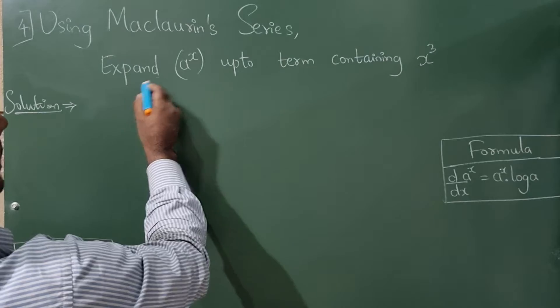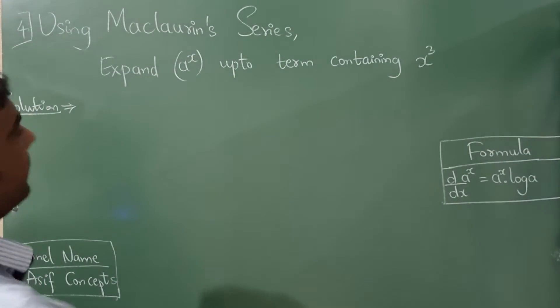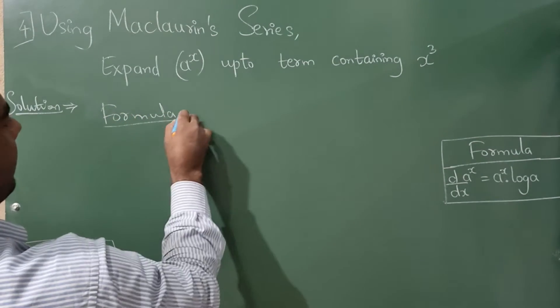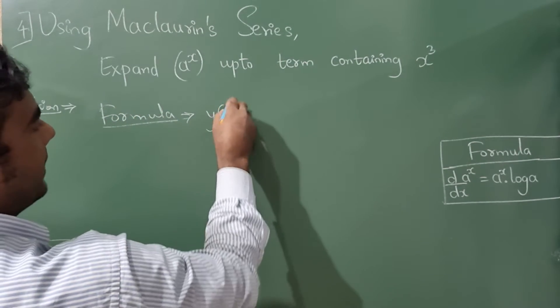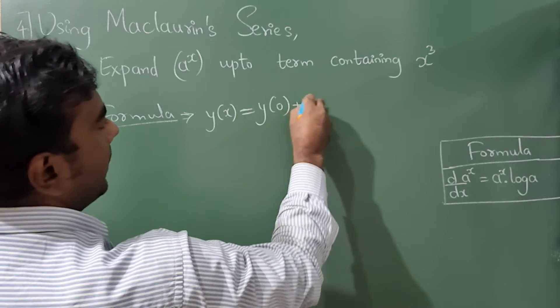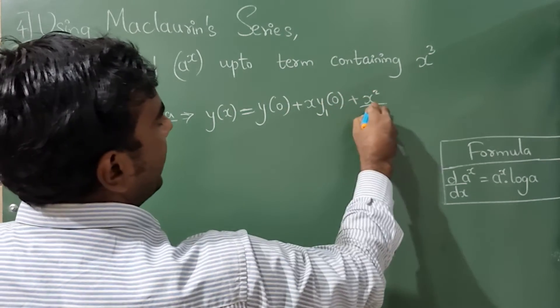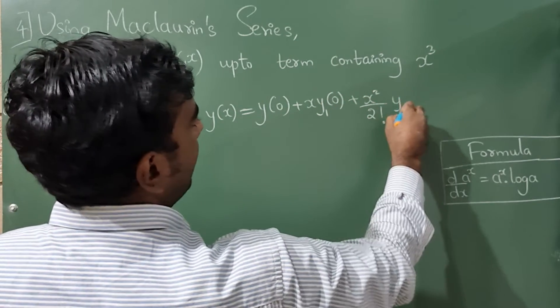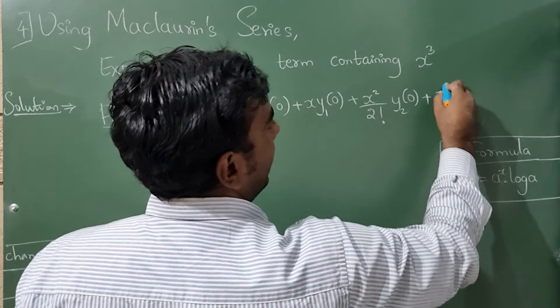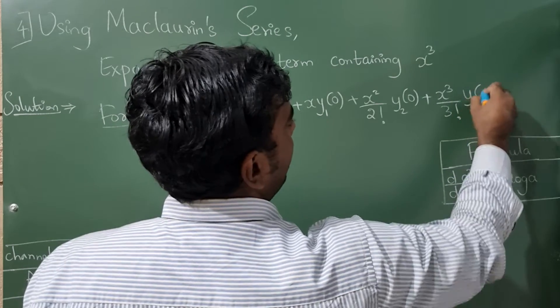Using Maclaurin series, expand a raised to x up to term containing x raised to 3. Now let me write the formula. y(x) is equal to y(a₀) plus x into y₁(a₀) plus x squared divided by 2 factorial y₂(a₀) plus x cubed divided by 3 factorial y₃(a₀) and so on.